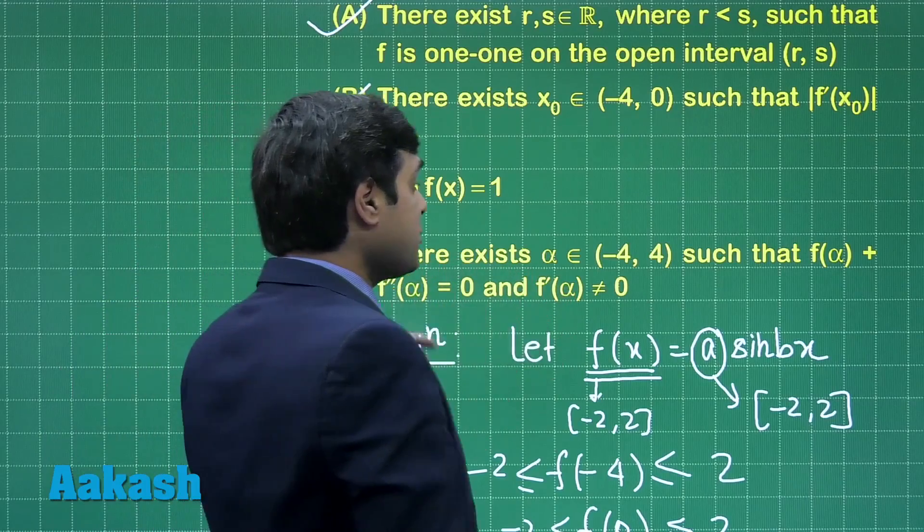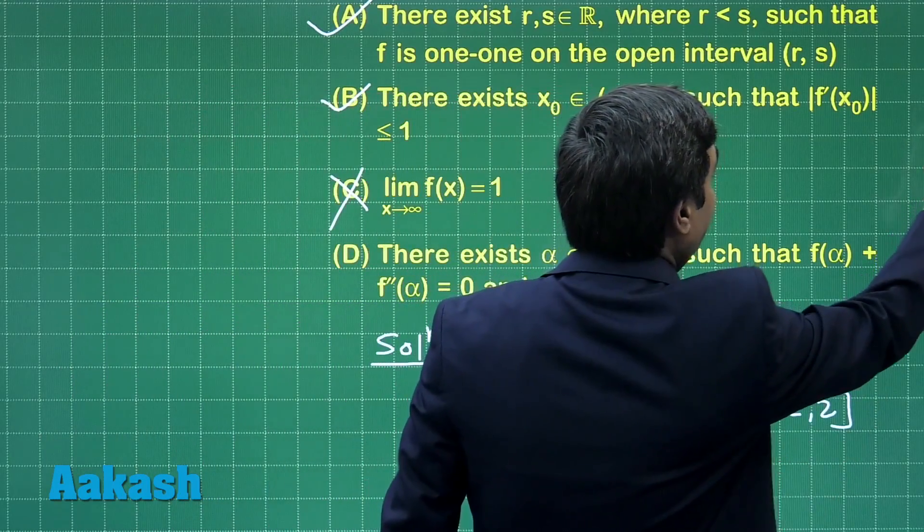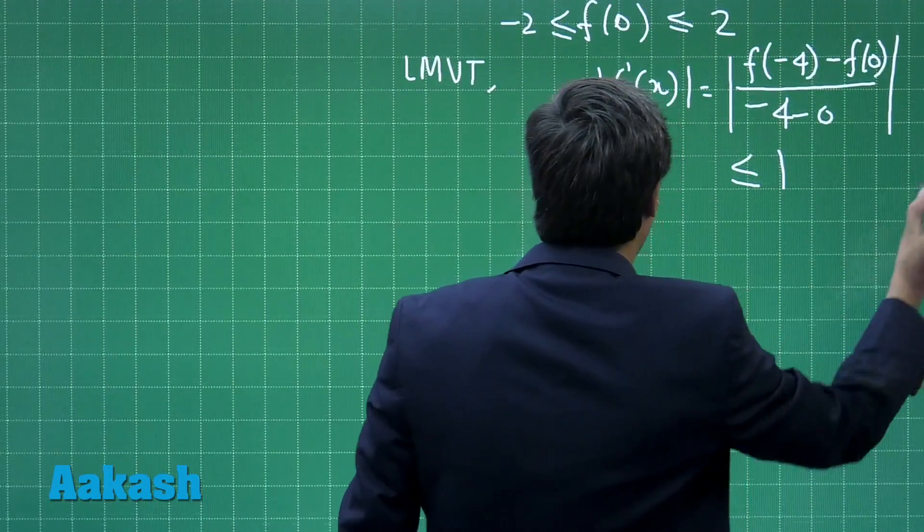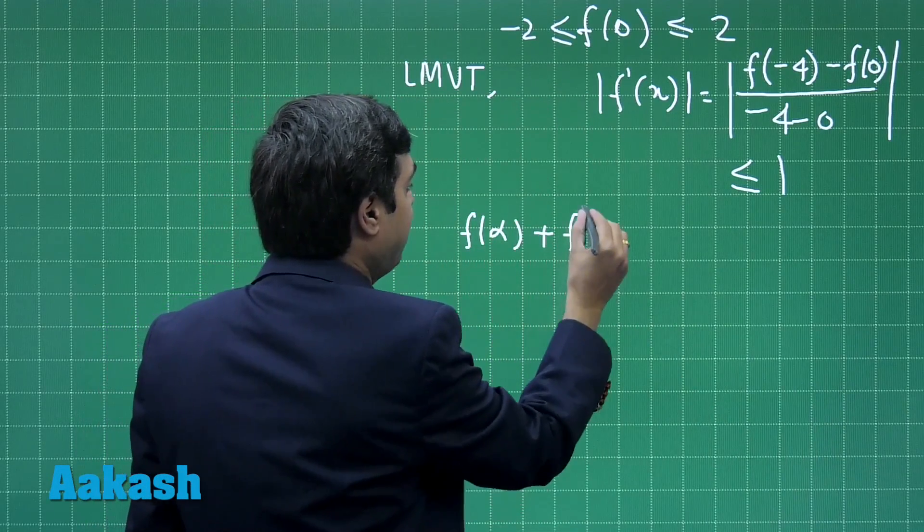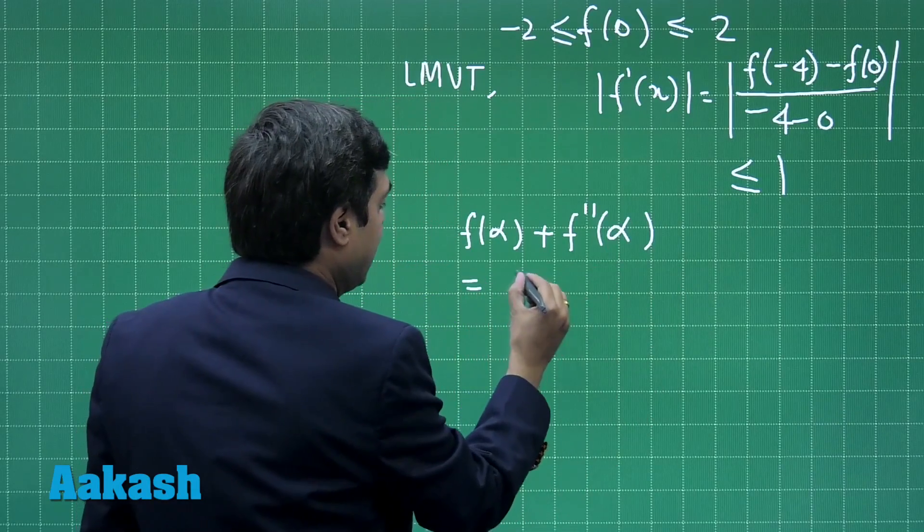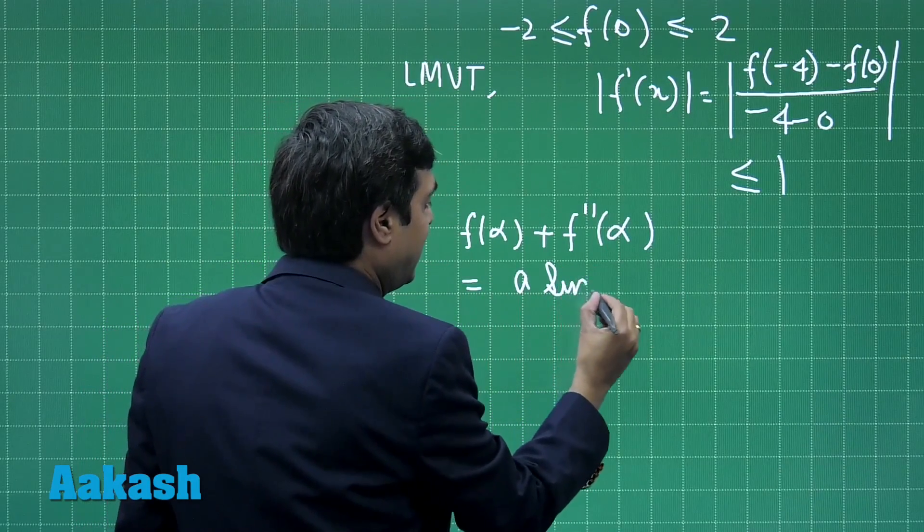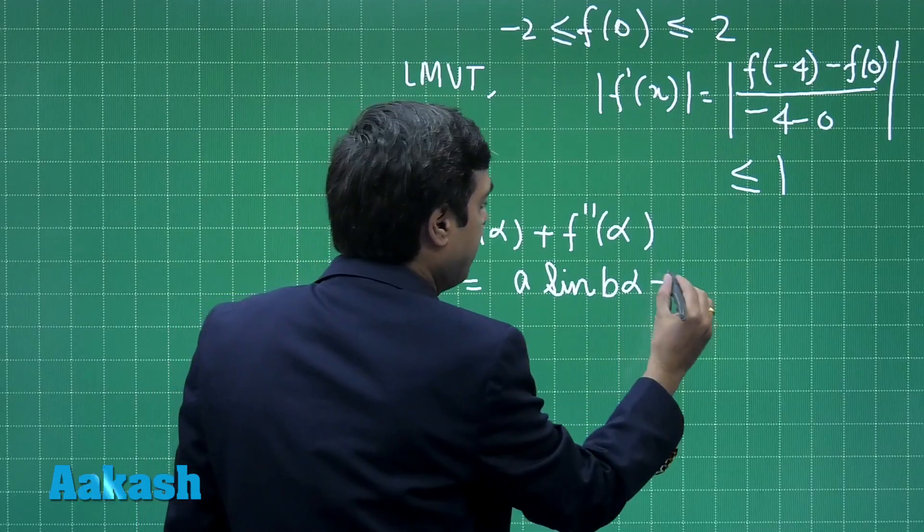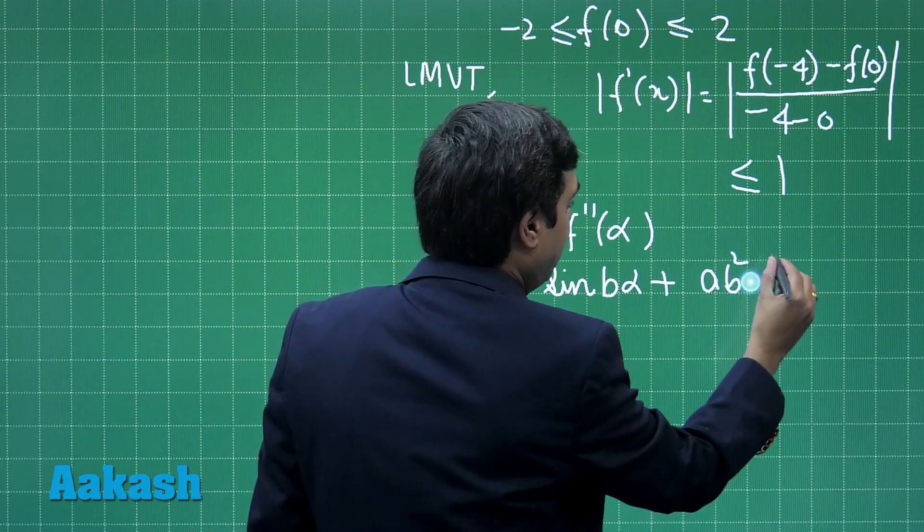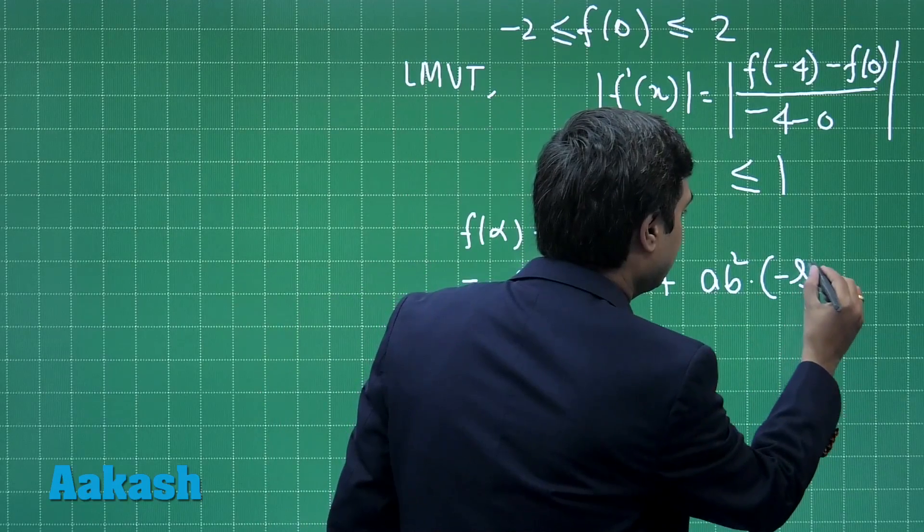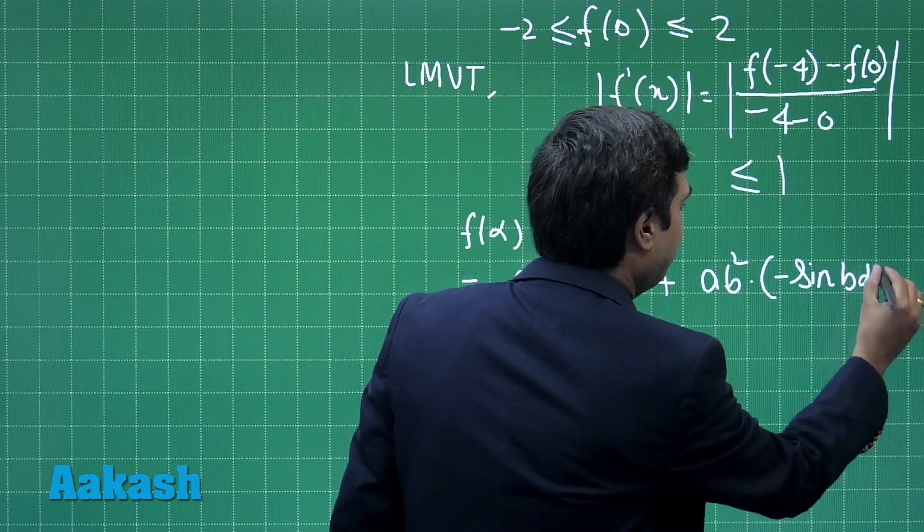Fourth one, it is talking about f(α) and f''(α). f(α) plus f''(α) meaning that a sin(bα) plus a b square into minus sin(bα).